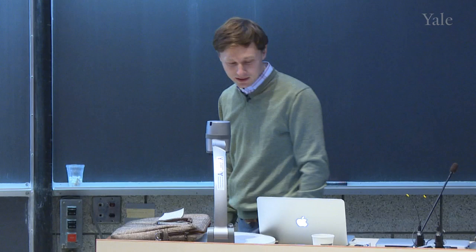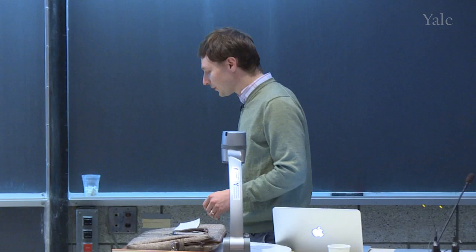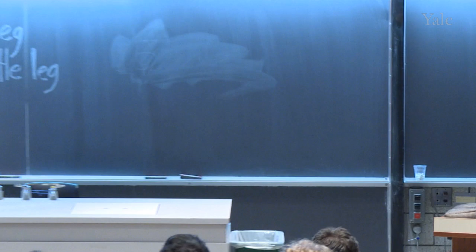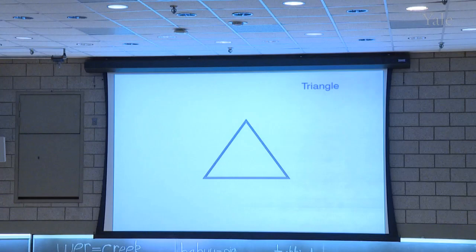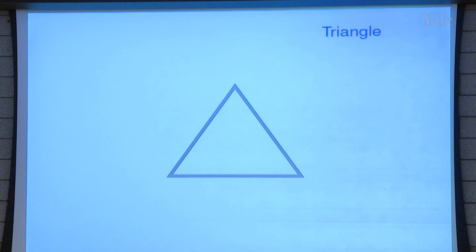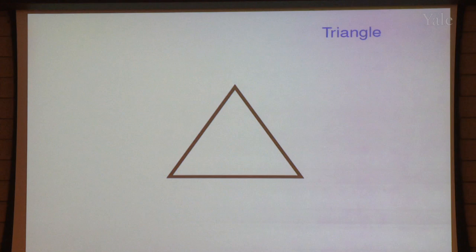I want to talk to you about symmetry, and probably the first highly symmetric geometrical object that we encounter in our lives is an equilateral triangle. An equilateral triangle is a triangle where all the side lengths are equal, and that's equivalent to the statement that the interior angles are all 60 degrees.